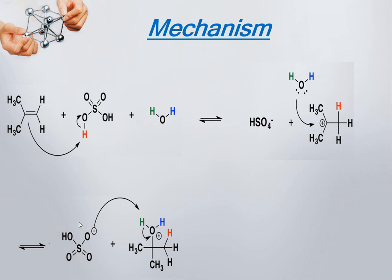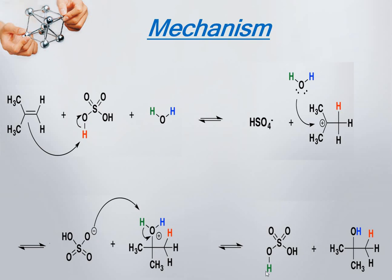When water attacks the carbocation, oxygen attaches to the carbon atom and develops a positive charge because it has formed more bonds than its capacity. The bisulfate ion then removes a proton from this water molecule — acting as a catalyst, sulfuric acid is regenerated. What remains is an OH group on the carbon, producing an alcohol. Hydrogen is attached to one carbon following Markovnikov's rule and hydroxyl to the other. This second step — water attacking the carbocation — occurs at 100 degrees centigrade.